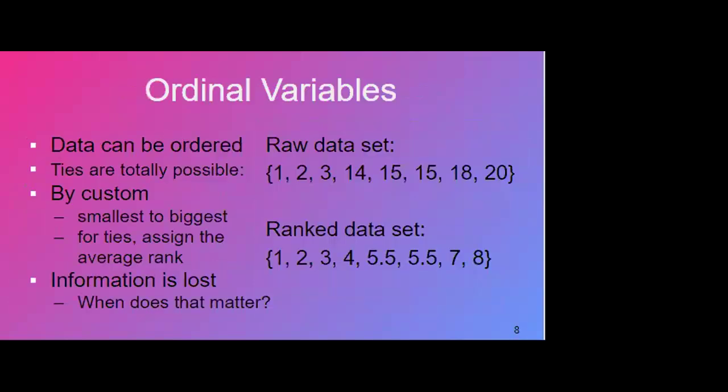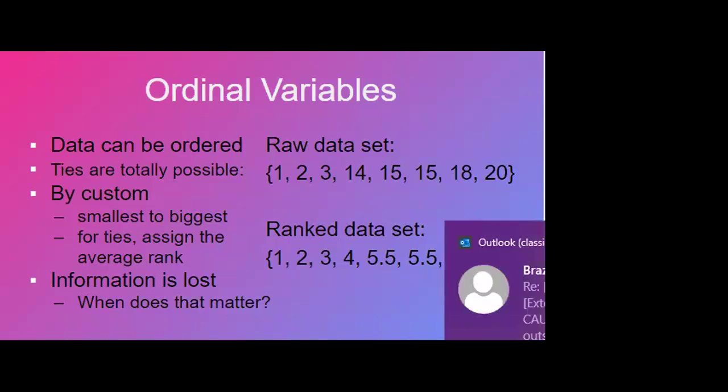So ordinal variables are just where we can clearly delineate whether something is larger or smaller than something else. So in survey questions, you can imagine strongly agree, agree, neutral, we don't care about the distance between the terms. But that idea that we can order things from smallest to biggest, smallest to biggest is our custom, we just do it so it always goes in the same direction. But that makes it so we can do that. So you have to know whether you're playing golf or football, whether a big number is good or bad. But we do that. The other thing we do is for ties, we assign the average rank.